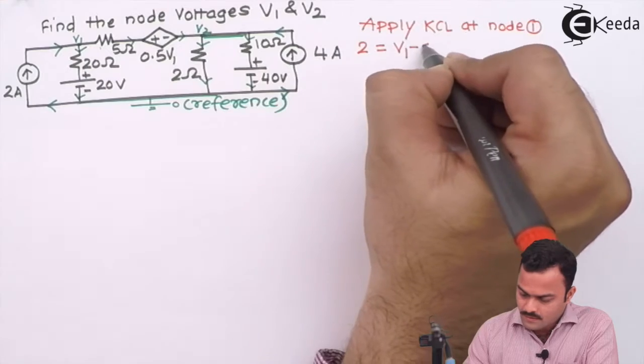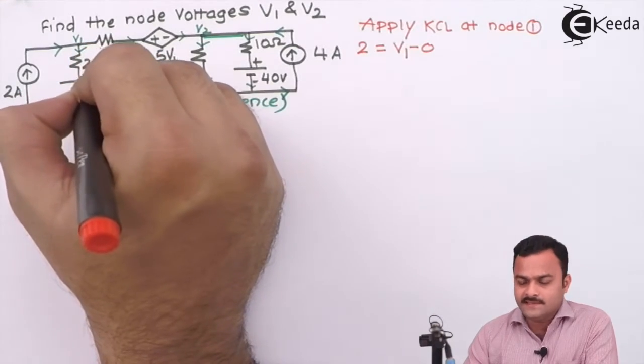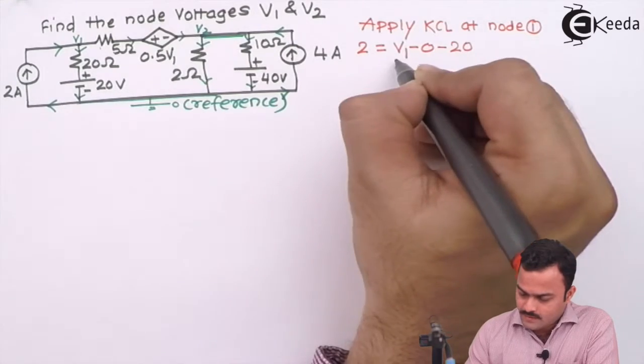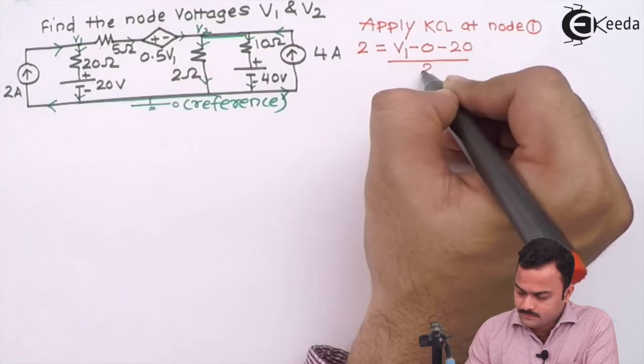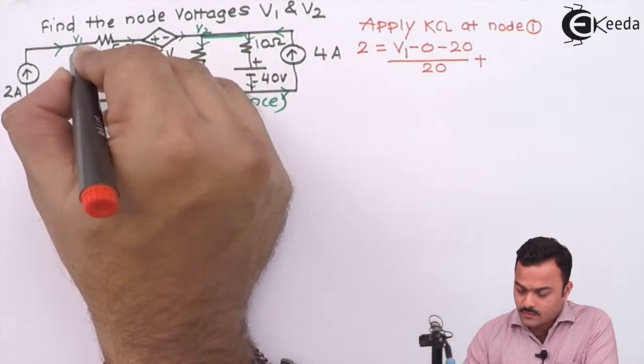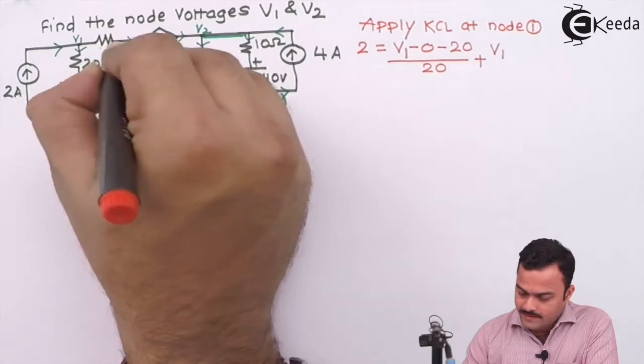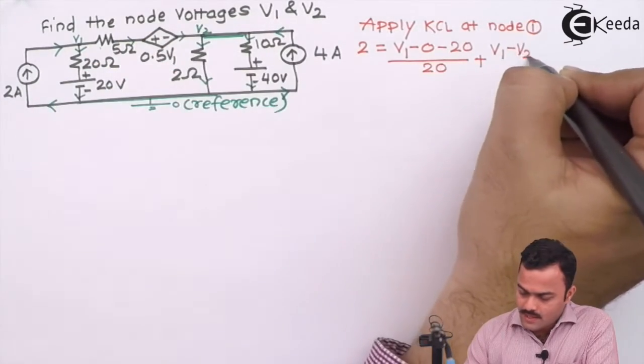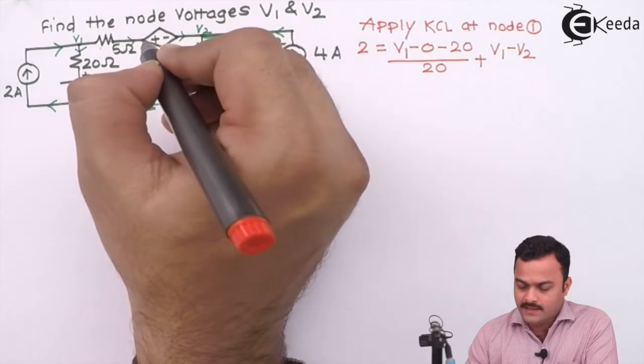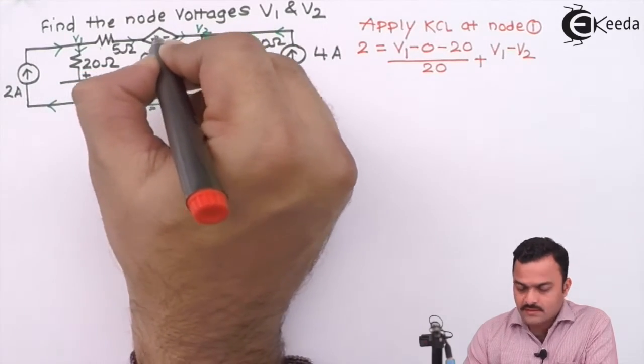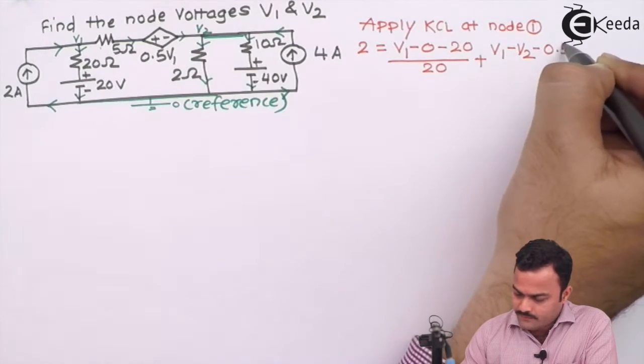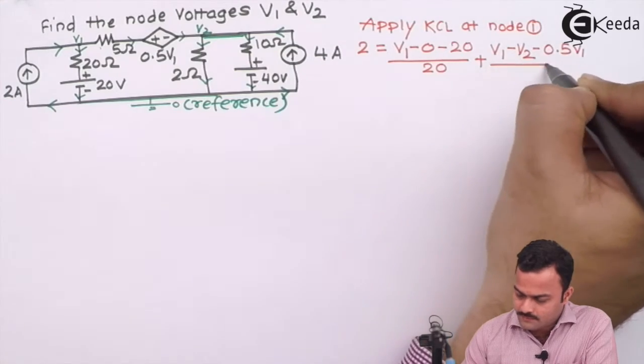For this branch current, it is starting with V1, ending on reference. In the current direction the voltage is changing its polarity from plus to minus, which is a voltage drop, so minus 20, and the resistance in the branch is 20 ohm. Plus this is also outgoing, started with V1 ending on V2. In the current direction there is one more voltage source. Though it is dependent, still we have to count plus to minus, so it's a voltage drop.